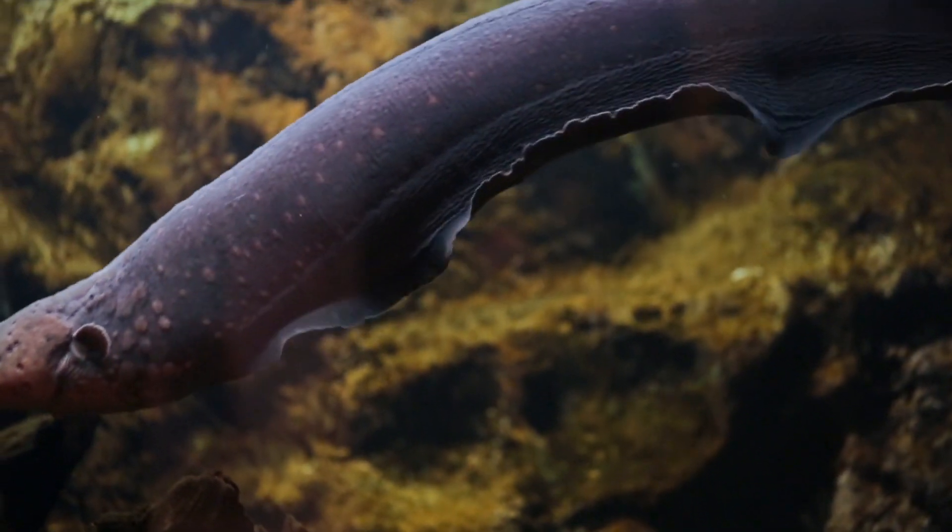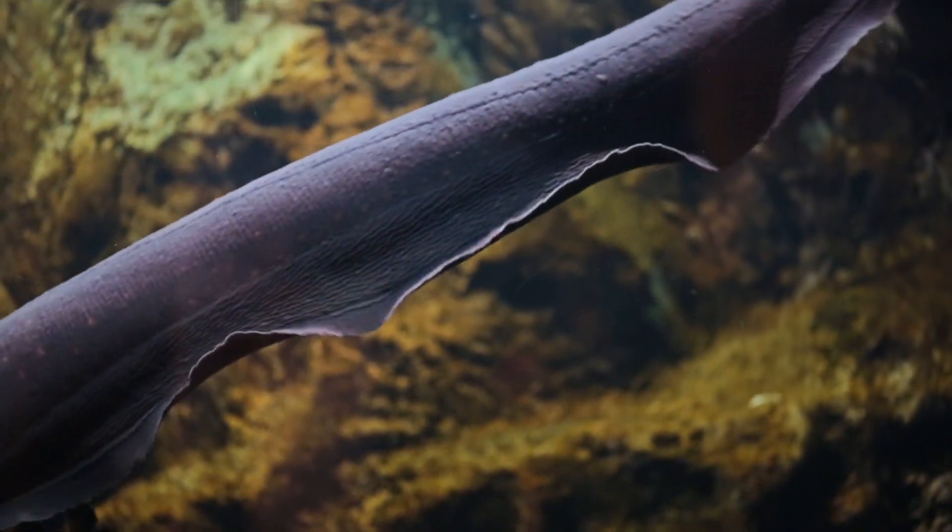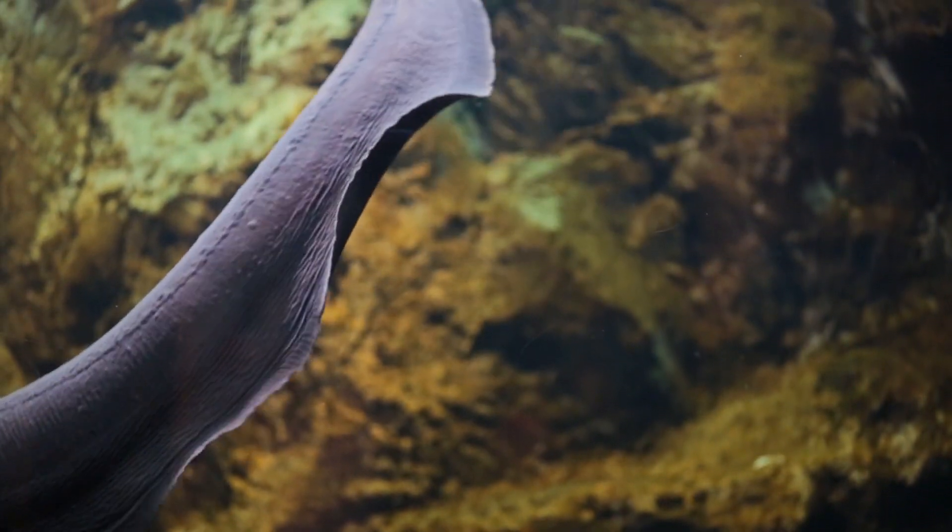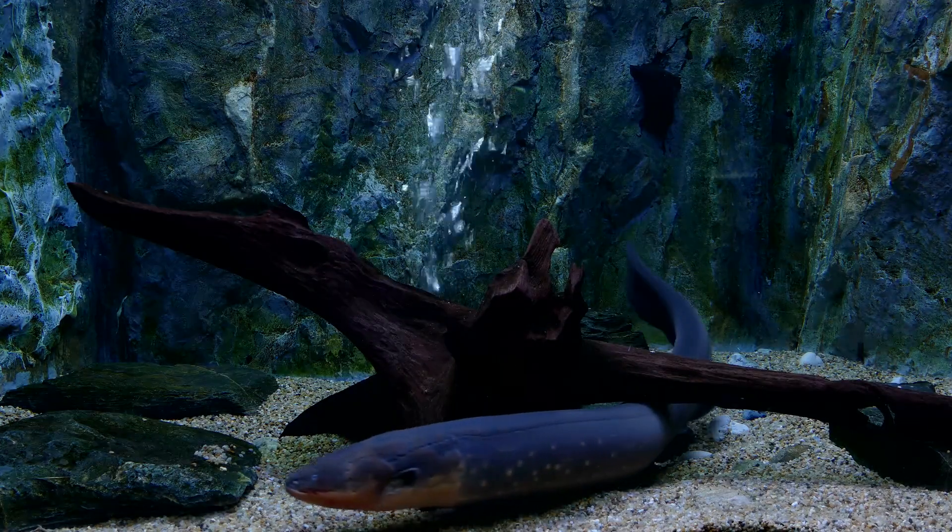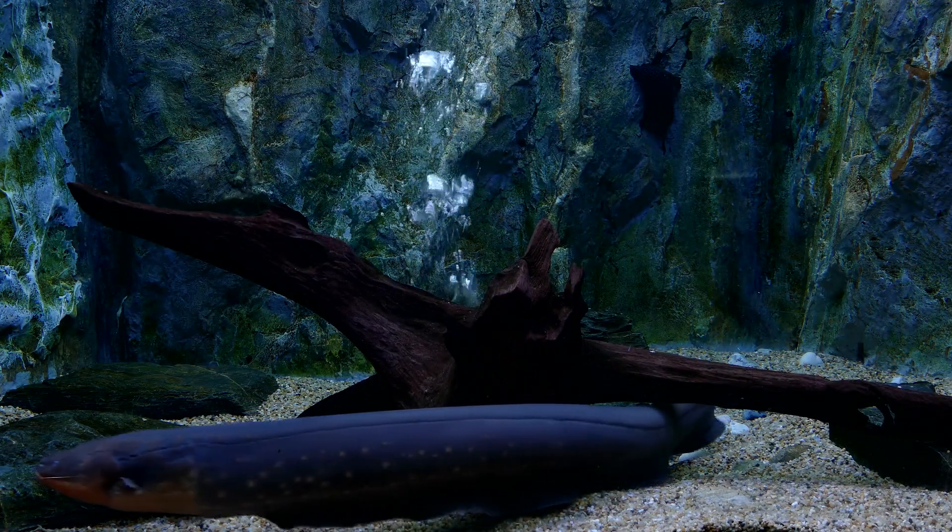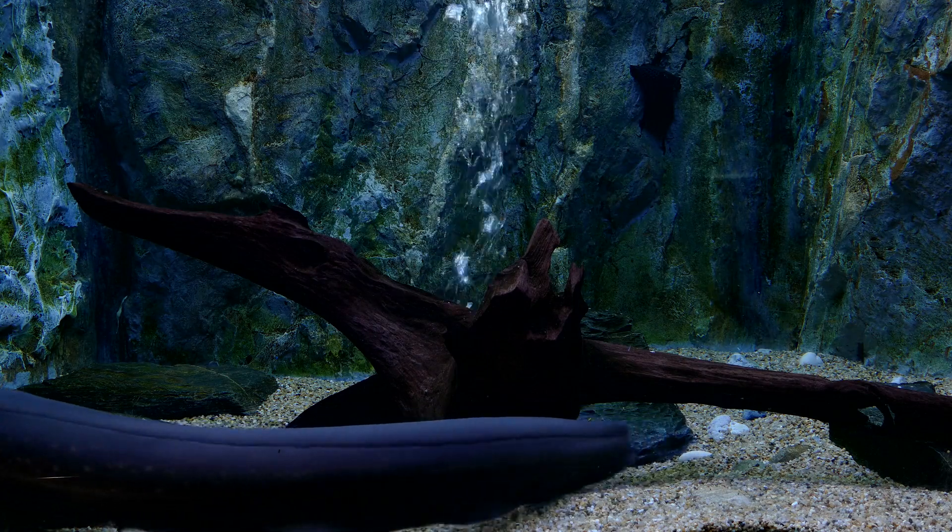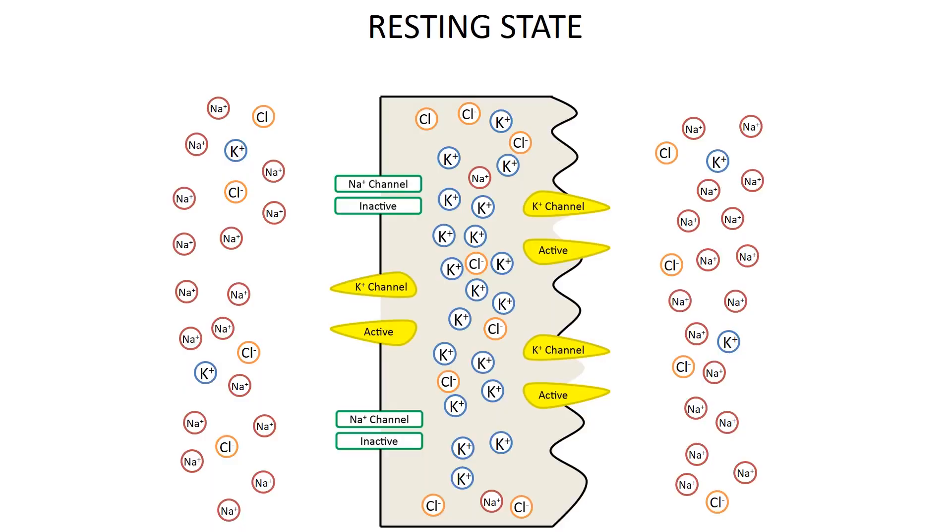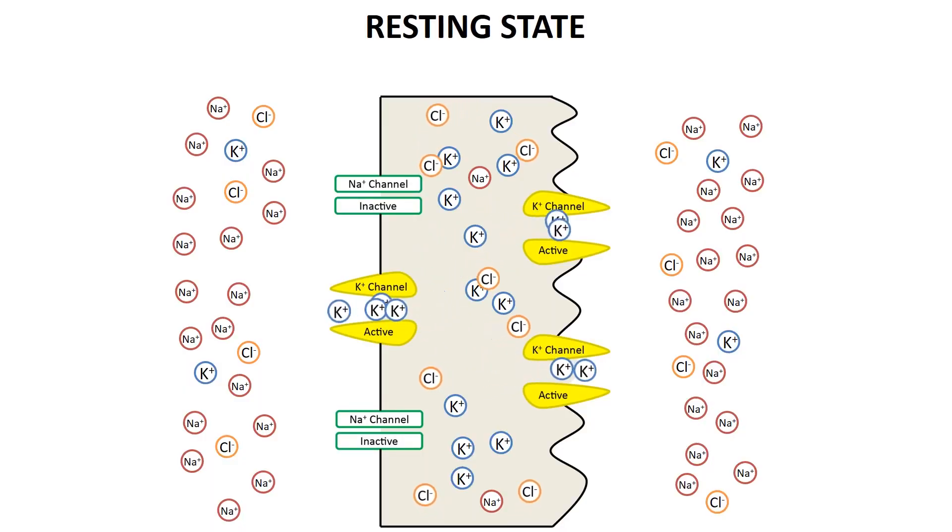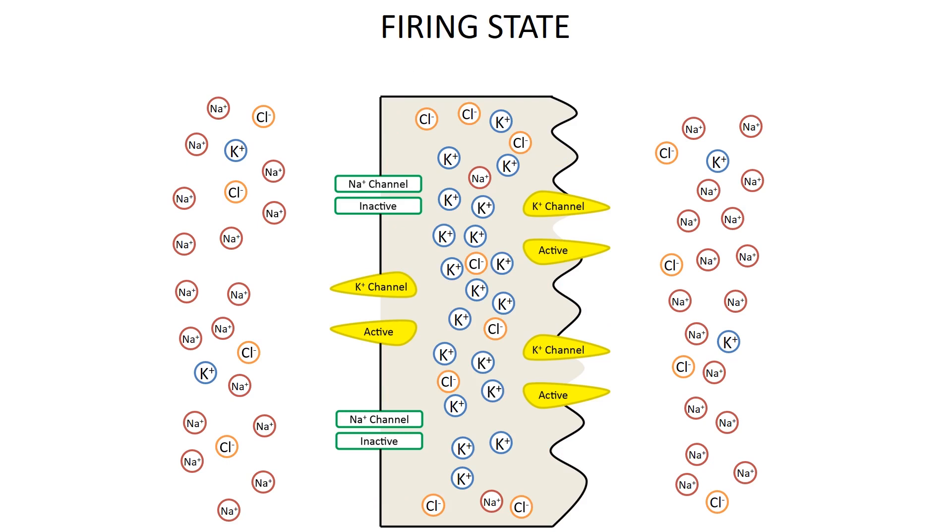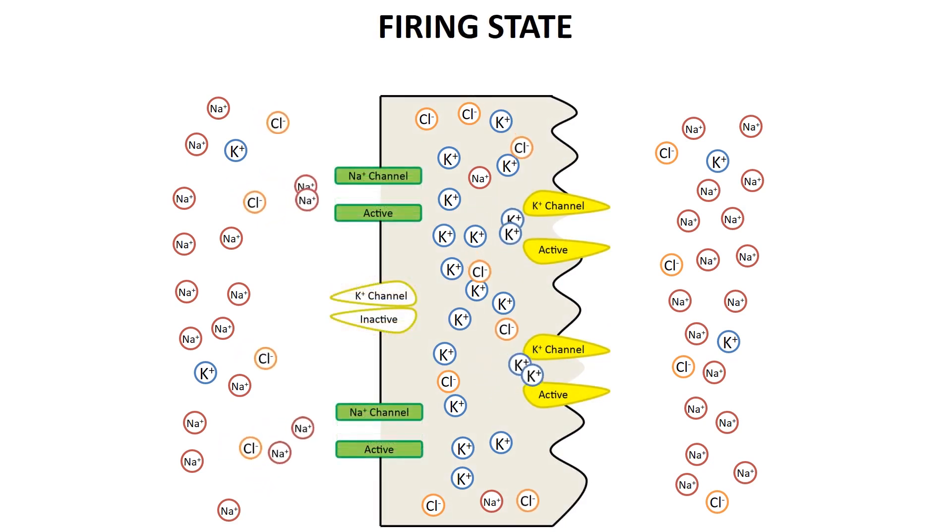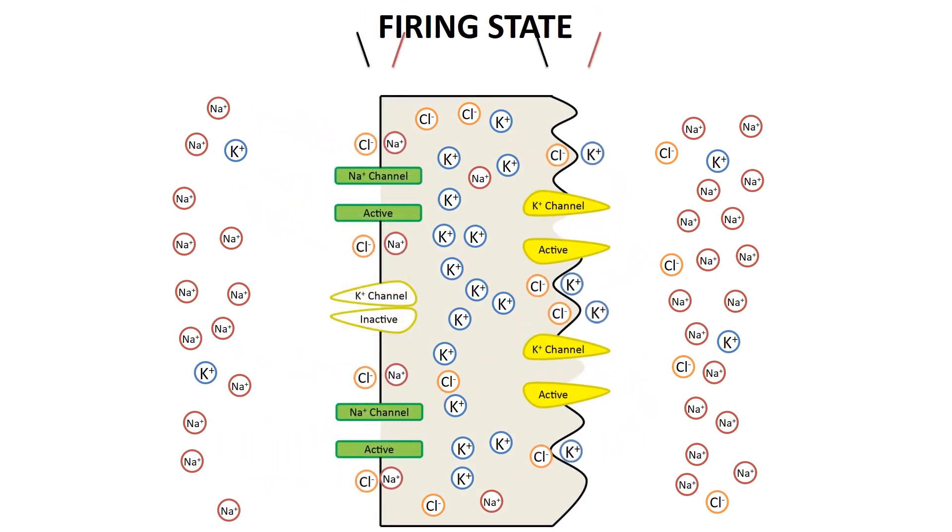An eel's unique ability to generate electricity comes from a specialized organ. When an eel is at rest, the organ does nothing. But if the eel is startled, neural impulses jumpstart the organ, activating thousands of cells called electrocytes. These cells contain a series of positively and negatively charged ions. The eel can reverse these charges at any time, potentially just charging 600 volts through its skin.